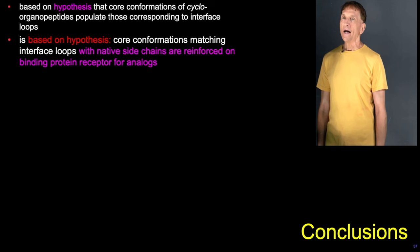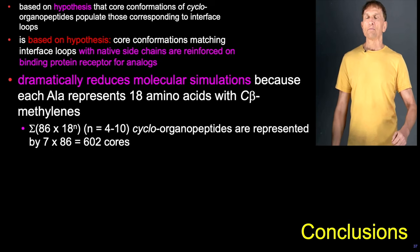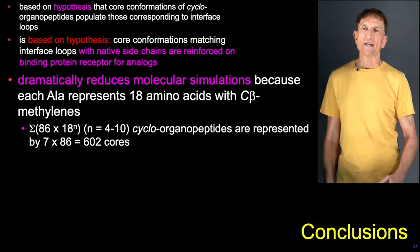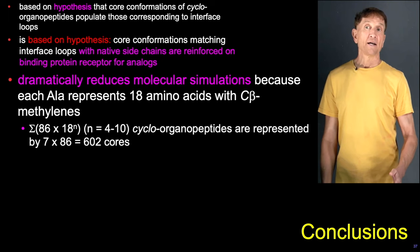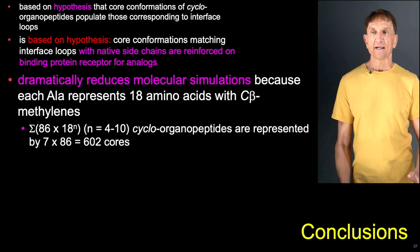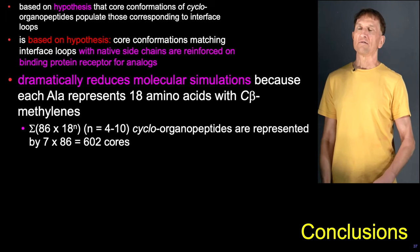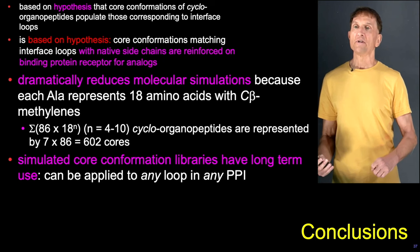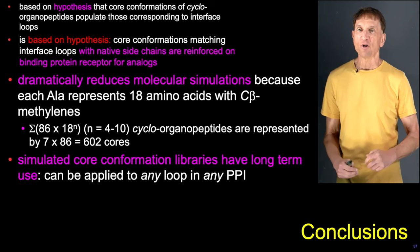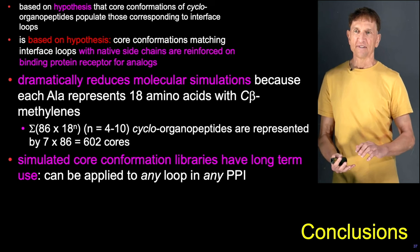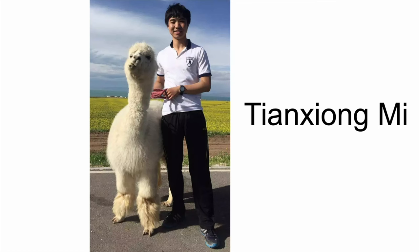This dramatically reduces the number of molecular simulations, because each cycloorganopeptide made with only alanine represents, say, 18 amino acids at every different position — so there are many combinations which by conventional docking techniques would have to be tested. We just do those cycloorganopeptides corresponding to the different ring sizes with the different organic fragments — in our case about 600. We simulate the core conformations of these virtual libraries once and can apply them to any PPI. We're just matching with crystal structure coordinates to find the best overlay. Chen Shangmi wrote the computer scripts, did the molecular modeling, made the compounds, and performed the biophysical assays. Thank you very much for listening.